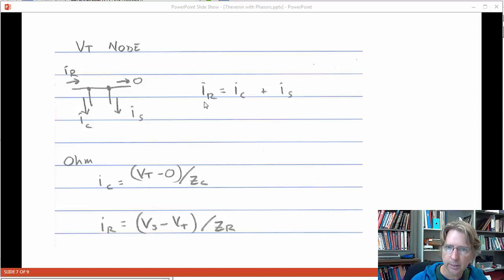Kirchhoff's current law, current going in is IR equals current going out IC plus IS. And then Ohm's law for the impedance elements. So the current through the capacitor, it's the tail voltage of the capacitor, VT up here, minus zero, it's connected to ground, divided by ZC. IR, the tail voltage is VS, this is from here, head of the arrow is VT, VS minus VT divided by ZR.